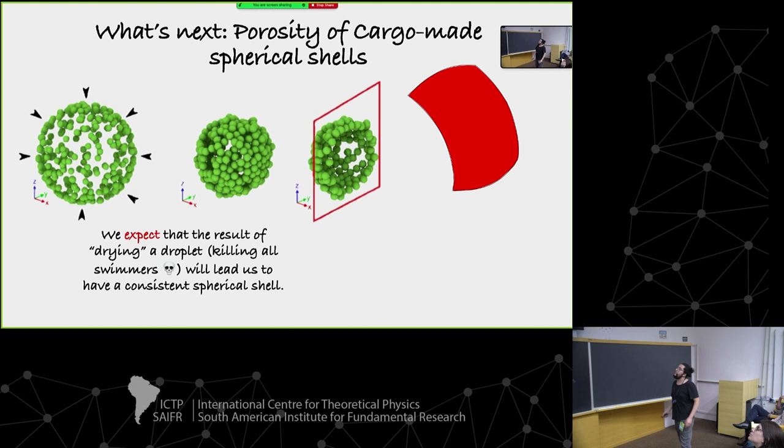In summary: swimmer accumulation at the surface shows a strong dependency on aspect ratio and packing fraction of the sphere. Cargo deposition decays with a power law, but we need to compare with an analytical model. And the remaining result to obtain is quantifying spatial connectivity using topological data analysis and seeing how it changes with aspect ratio and packing fraction of the sphere.